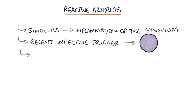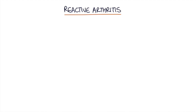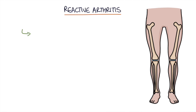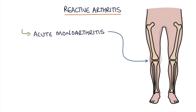Reactive arthritis used to be known as Reiter's syndrome, so you might still see that appearing in older textbooks or potentially in your exams. Typically it causes an acute monoarthritis — a single joint — which comes on fairly quickly.